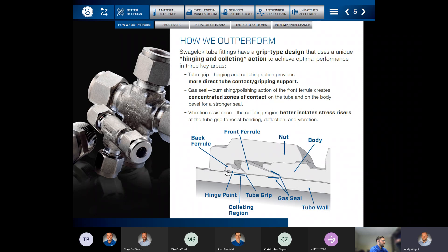If you'll notice there's a little notch that is cut out of the inside of that back ferrule. So when the nut is pulled up one and a quarter turns, that back ferrule is going to do what is called hinging and collating. And so you can see that the collating region is highlighted here.